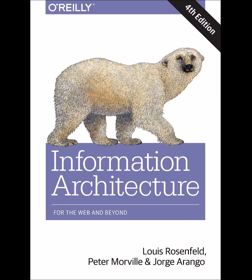We now move on to search systems, which allow people to find what they are looking for in your information environment. Recap of Chapter 9. Search is an important mechanism for finding information. However, it's not a given that your information environment requires a search system. Although search may appear simple — just type some words into the search box — there's a lot going on under the hood. Choosing what to index is an important step. There are many different types of search algorithms, and various ways of presenting results back to the user. These factors come together in the search interface.